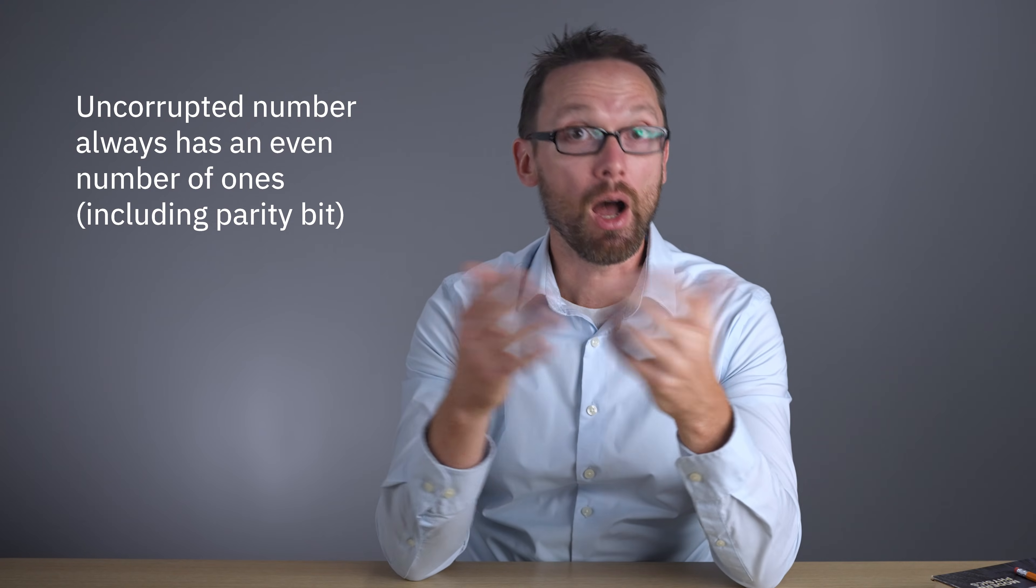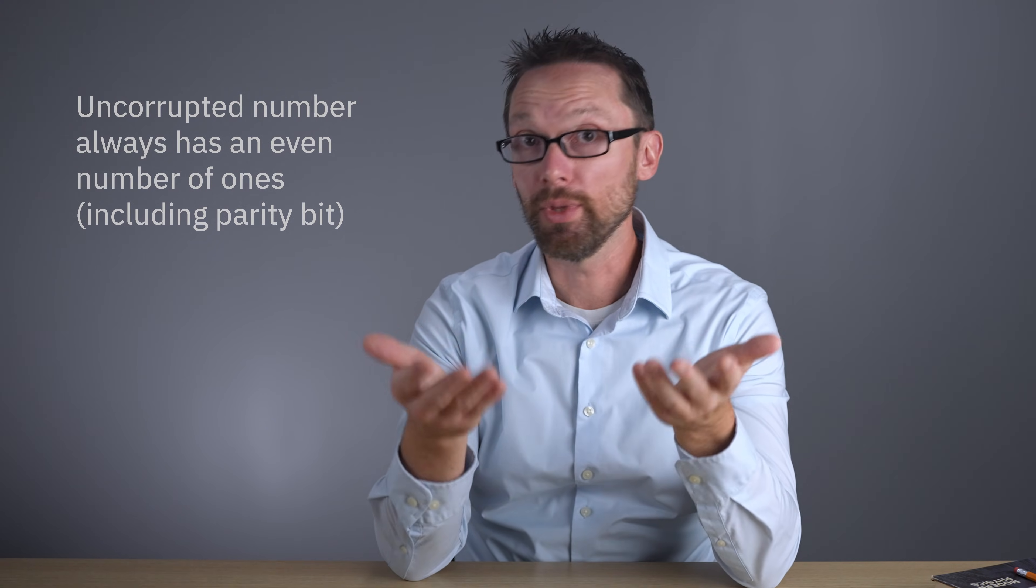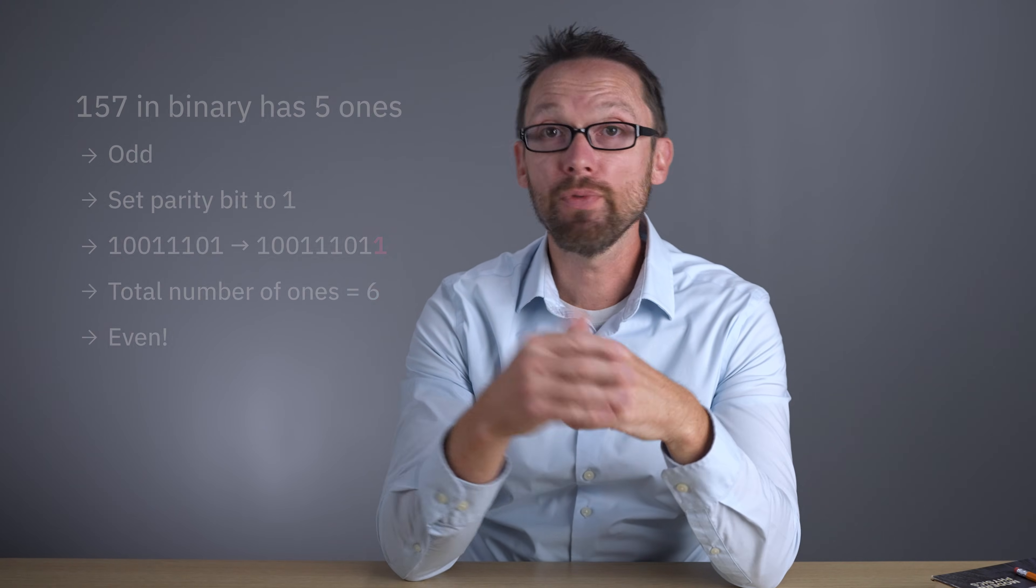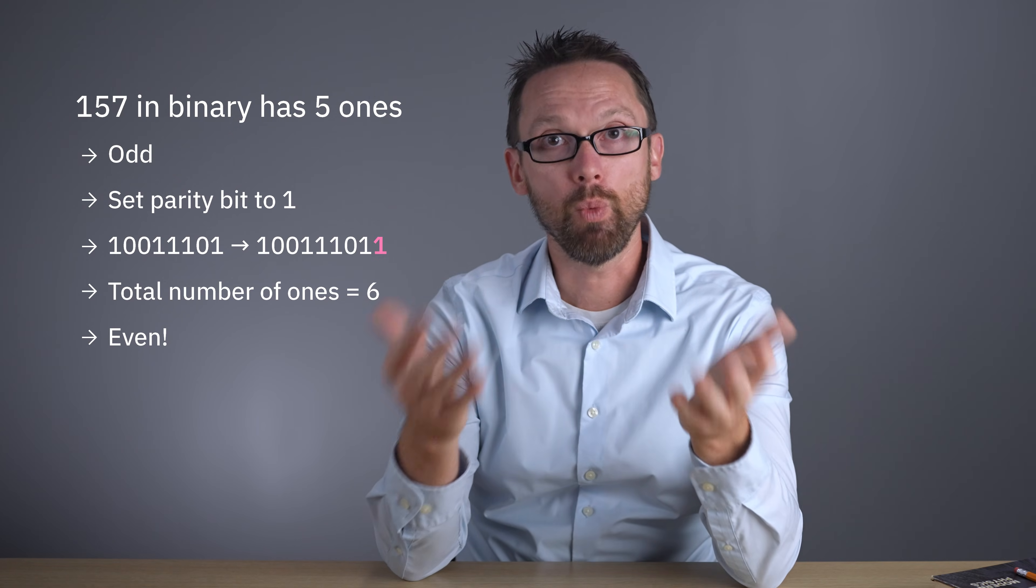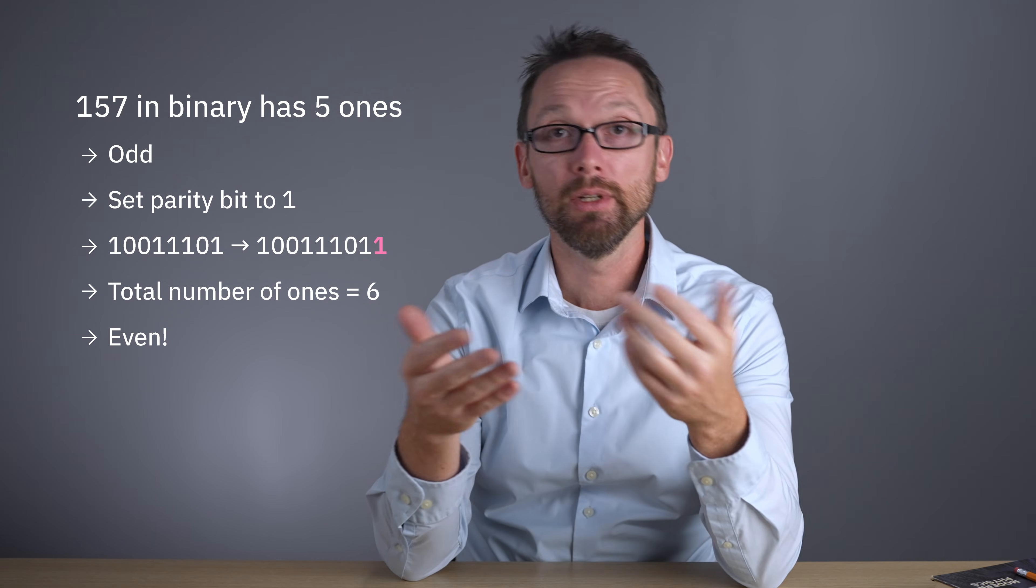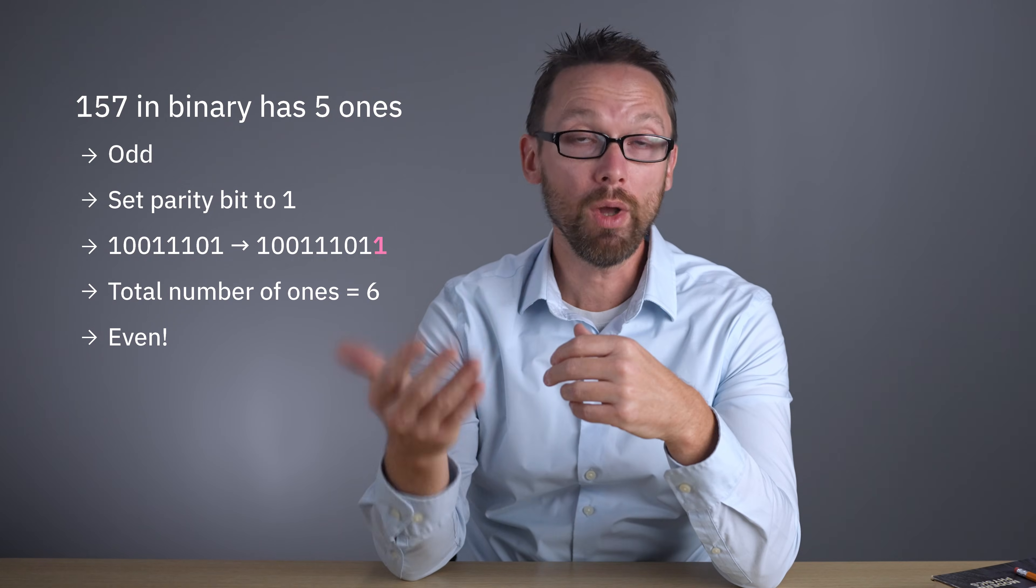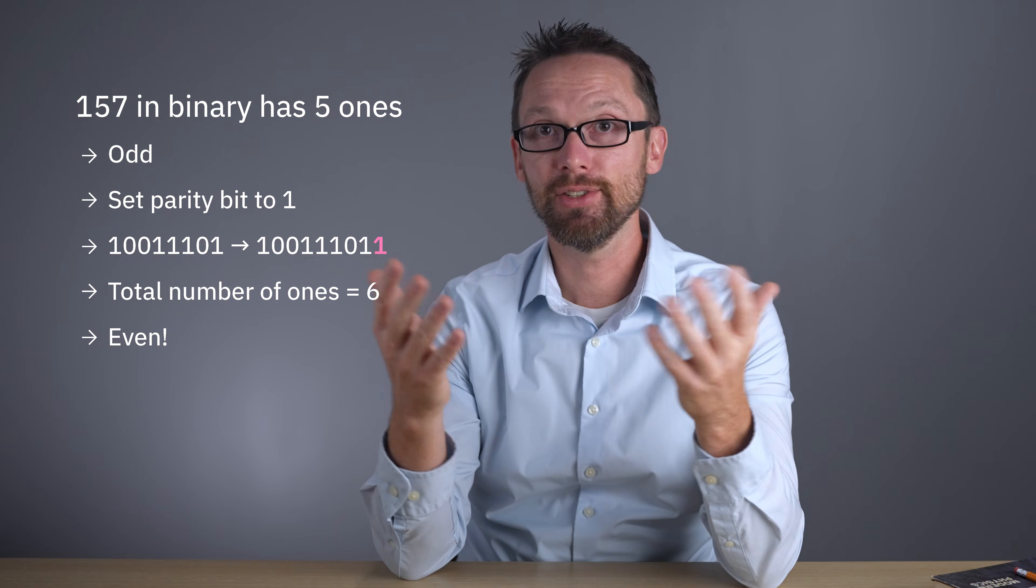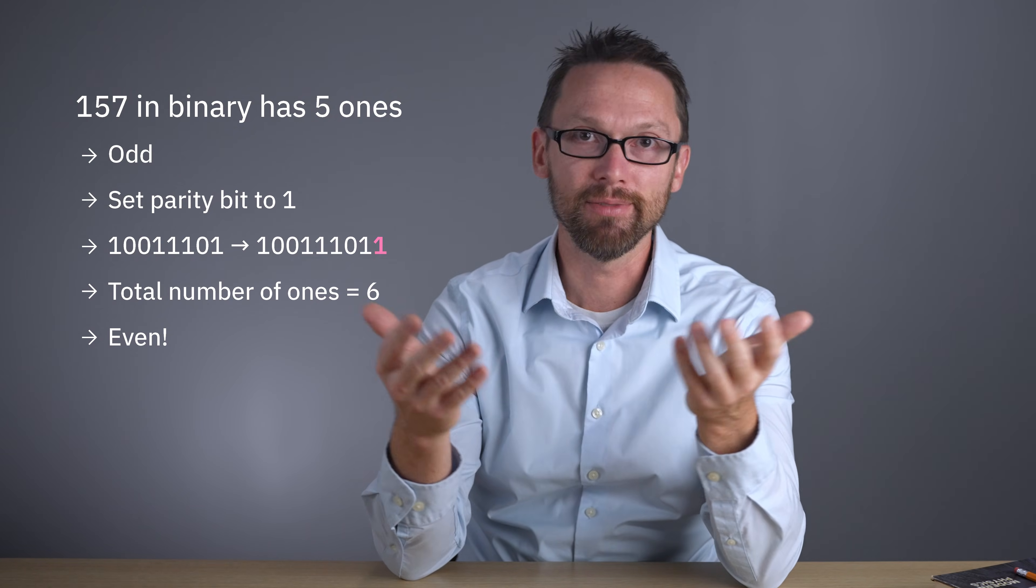So, if we see an odd number of 1s, we know that an error has occurred. So for 157, there are 5 1s without that final parity bit. 5 is odd, so we enter a 1 in the final bit. And as advertised, the total number of 1s is now even, 6.